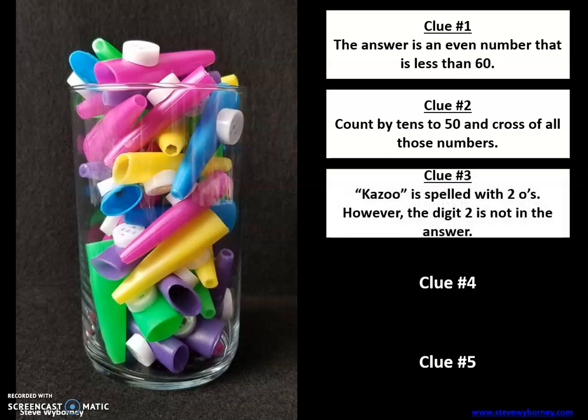Clue number three. Kazoo is spelled with two O's. However, the digit two is not in the answer. So if you have a two in your estimate, you need to make a change.